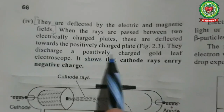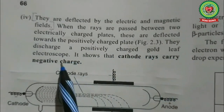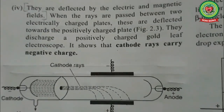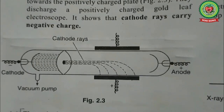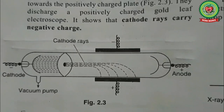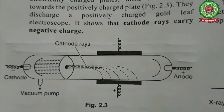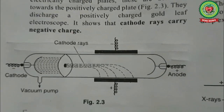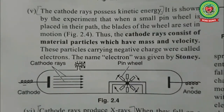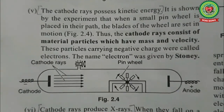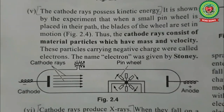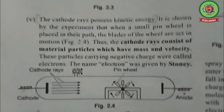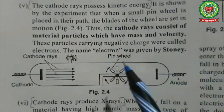The rays discharged a positively charged gold leaf electroscope, showing that cathode rays carry a negative charge. In this way it was proved that cathode rays carry a negative charge, since they deflected towards the positive plate of the electric field. The fourth property shows that cathode rays possess kinetic energy.